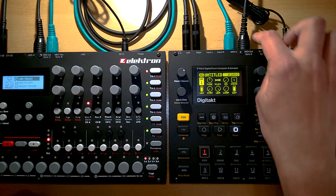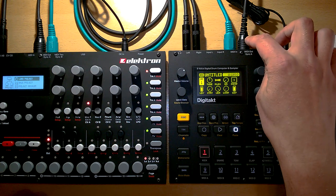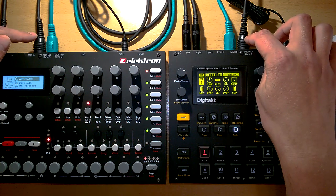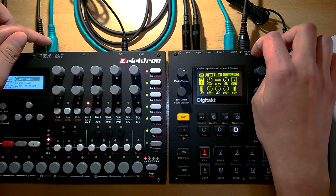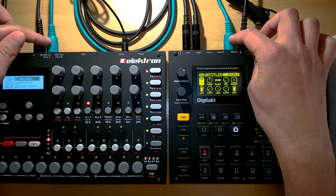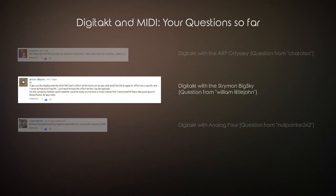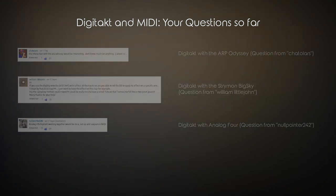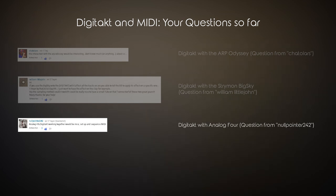Hello everyone. This is Umonox. Welcome to my third part of this little question and answer video series. In my last video, I answered a question from William Littlejohn, who wanted to see how the Digitech works along with the Big Sky. And today it's about a question from NullPointer242, who wanted to see how it works along with the Analog4. So without further hesitation, let's get started.